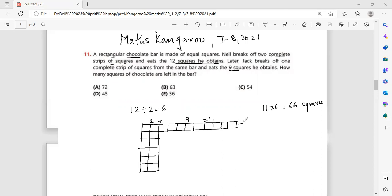Now, out of 66, 12 squares were earlier eaten. So you get 54 and nine were also eaten. So how many squares of chocolates are left? So there are 45 squares still left. So my answer is option number B, which is 45.